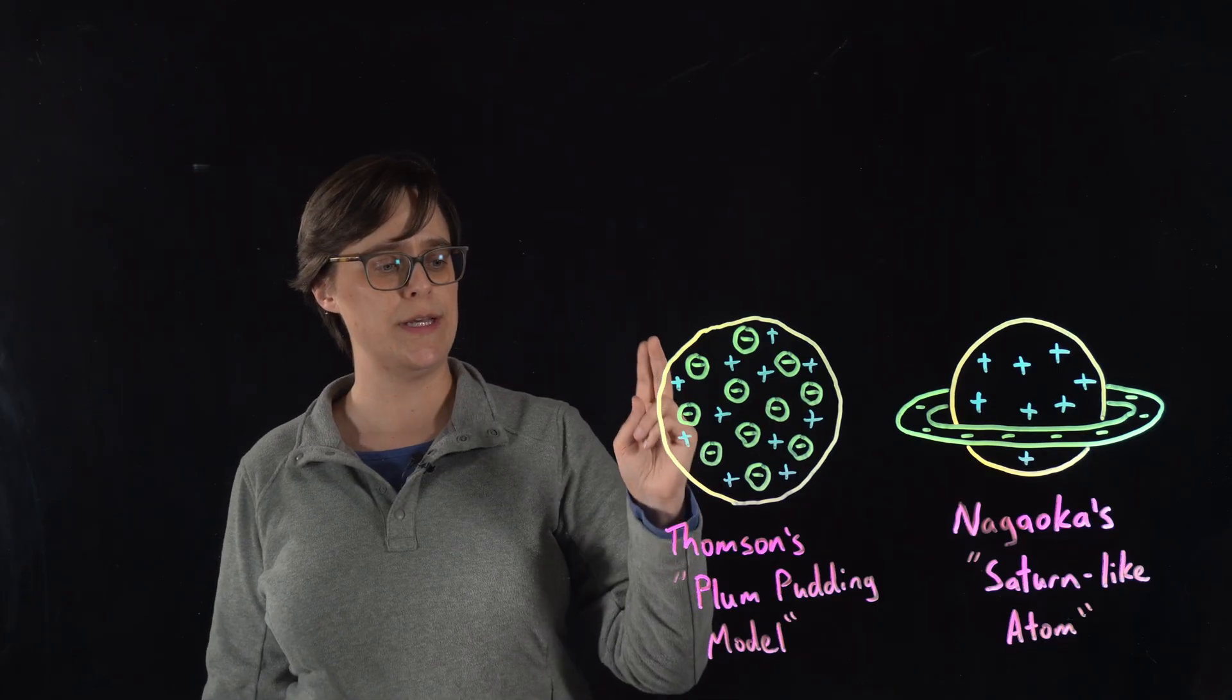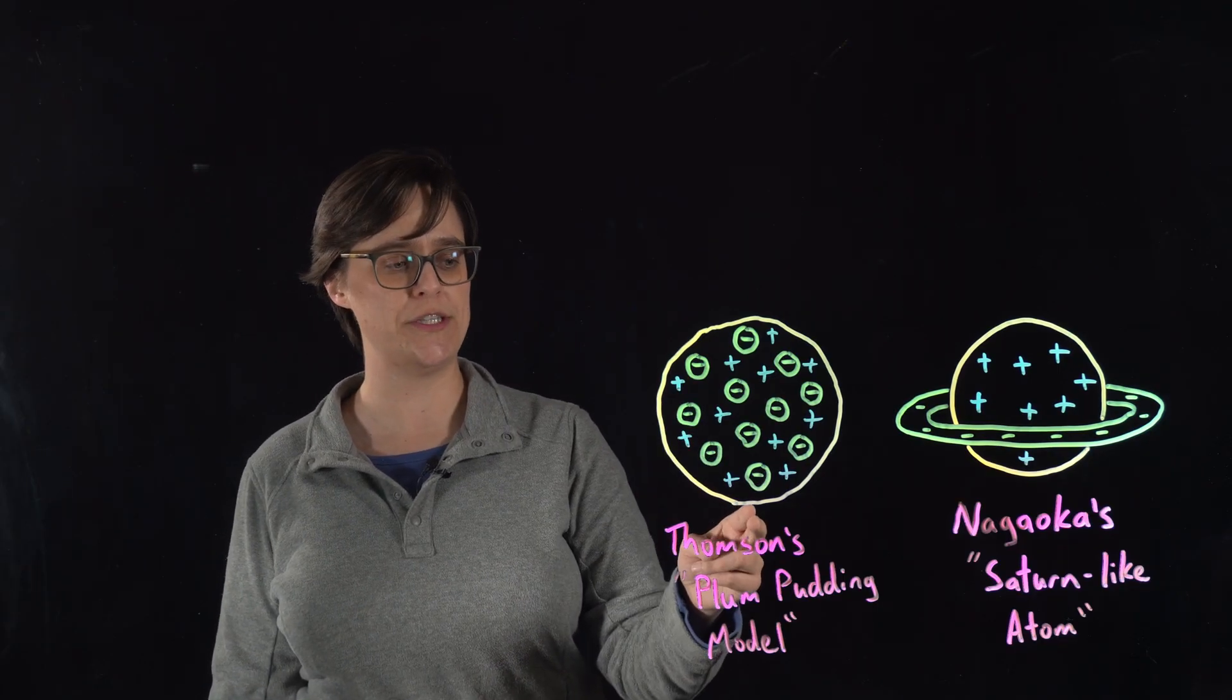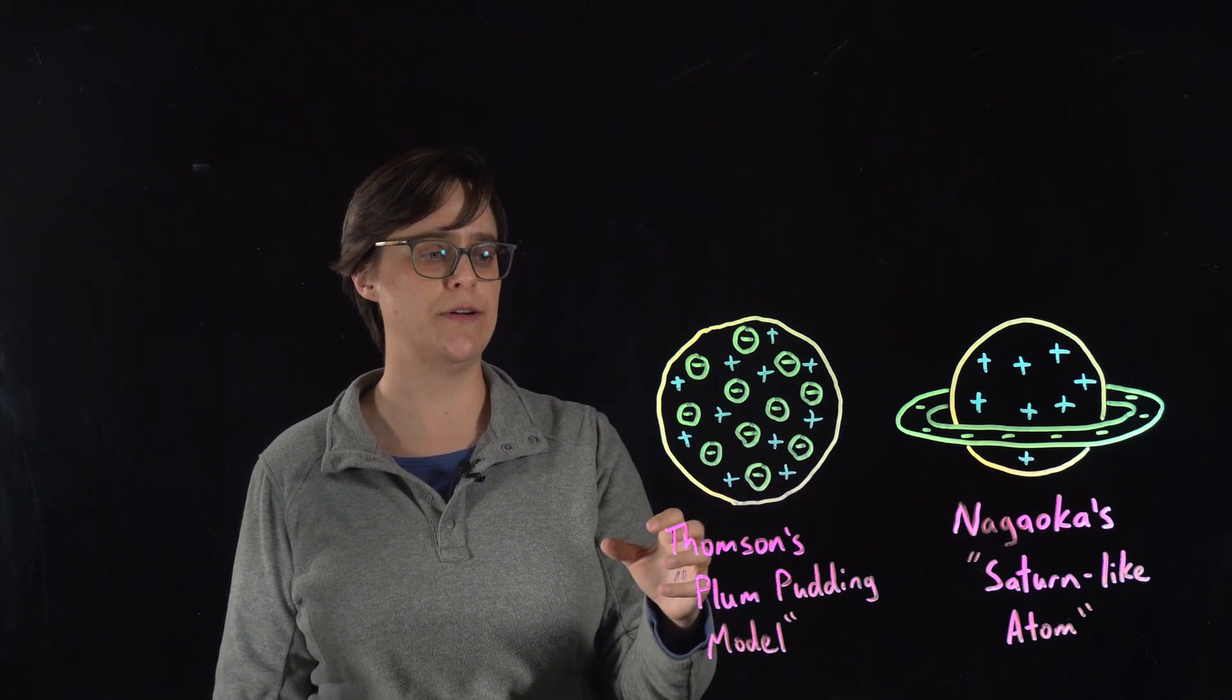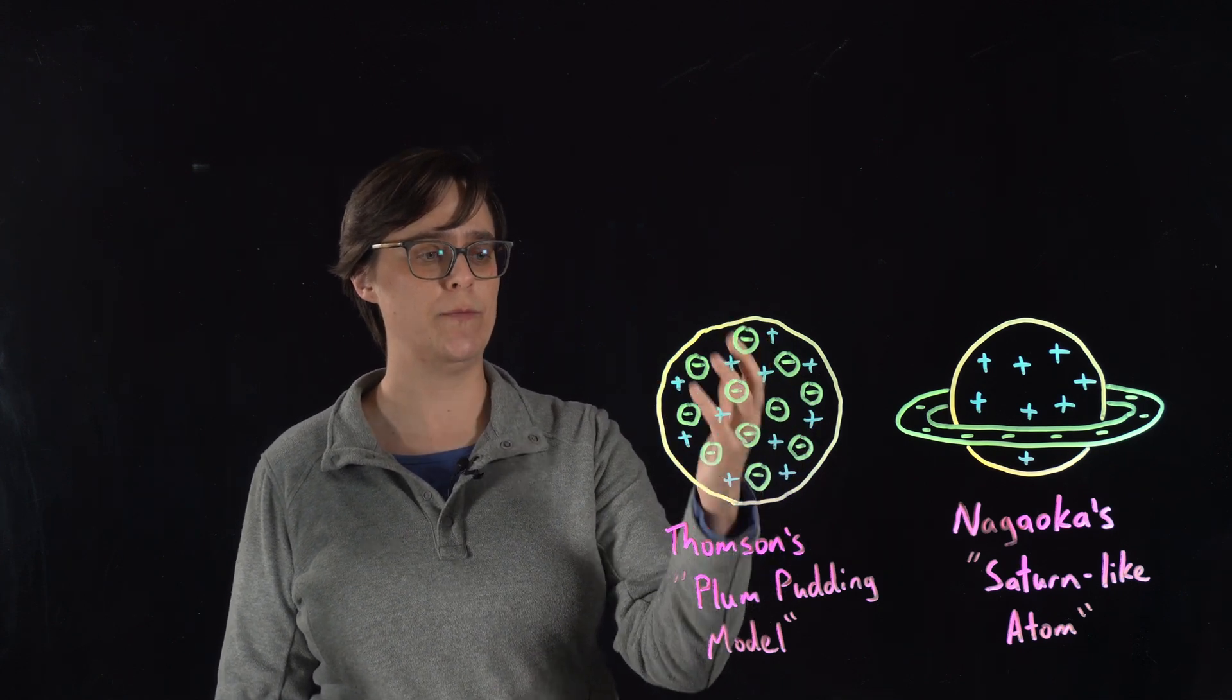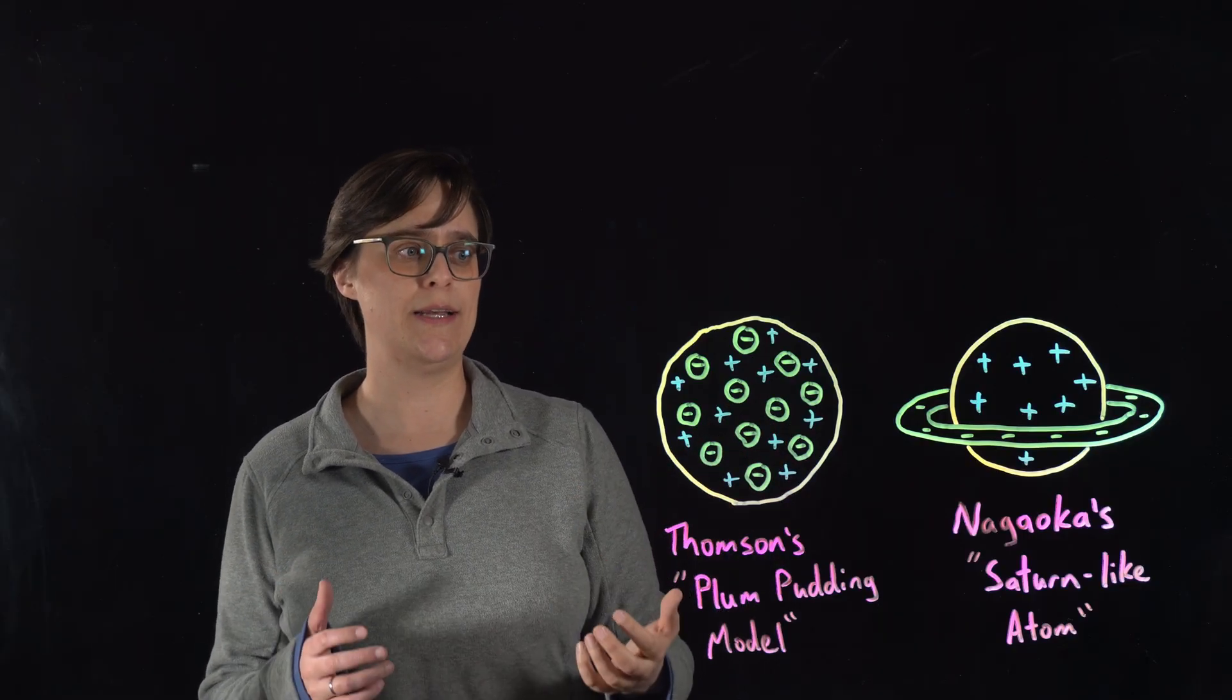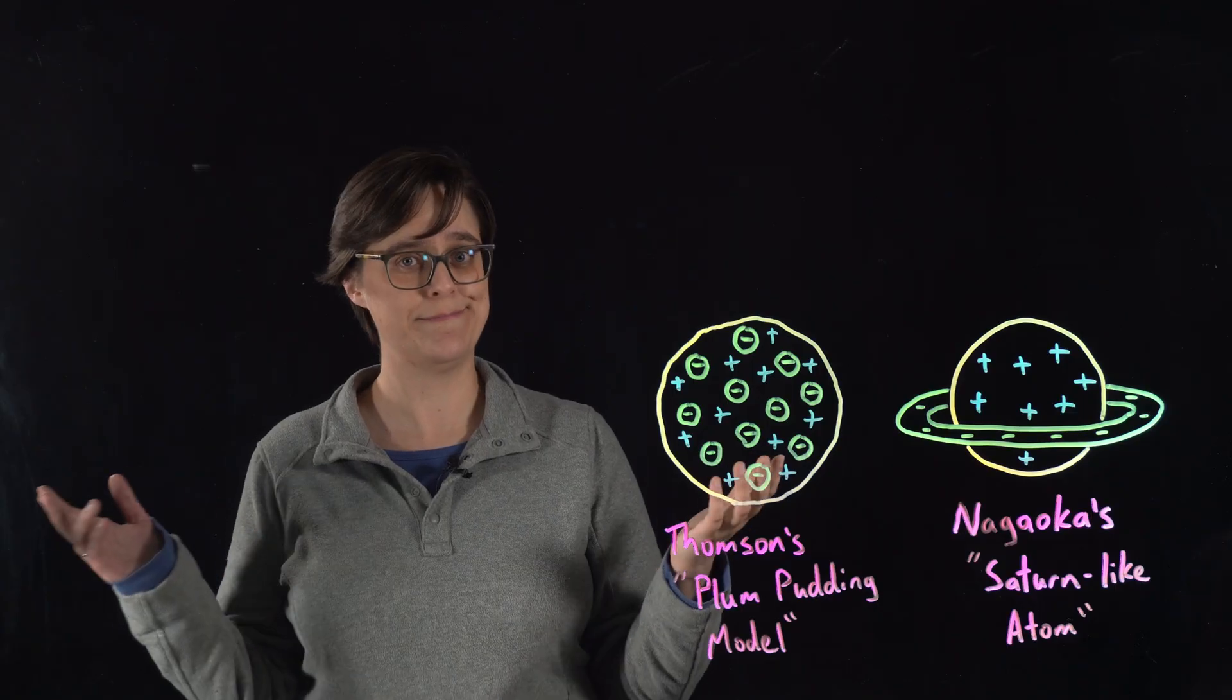And our second model is from 1904. This is JJ Thompson's plum pudding model in which we have negatively charged electrons mixed in with positively charged regions of the atom, kind of like raisins in a cake.